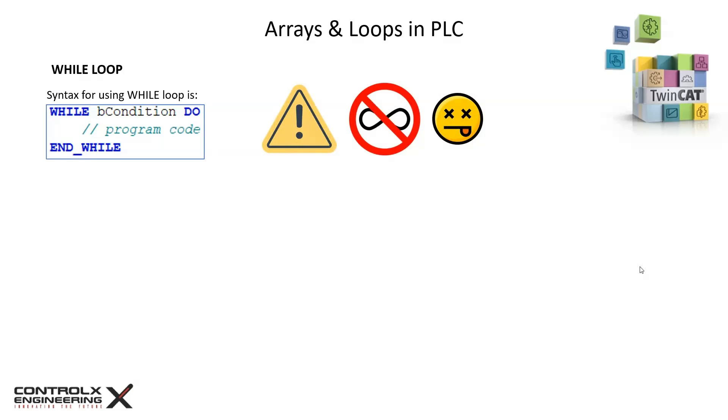Also, since the entire loop executes in a single PLC cycle, you must ensure that the instructions inside the loop don't exceed the cycle execution time. This can lead to runtime problems and the rest of your PLC code may not be able to complete the execution in that cycle.